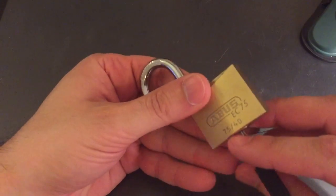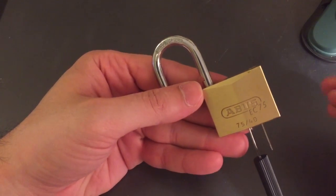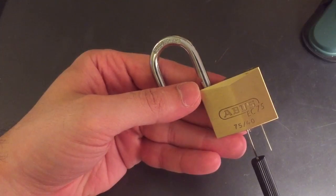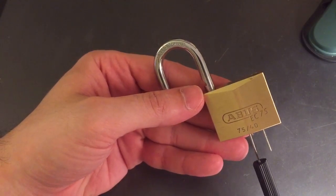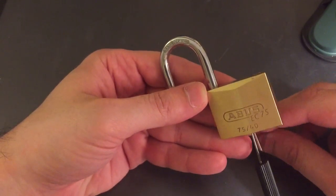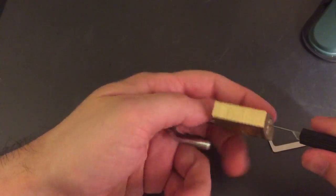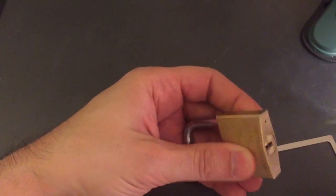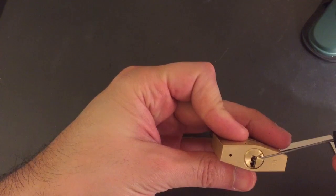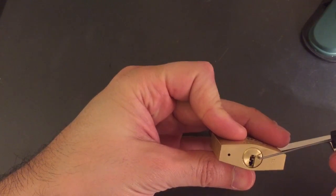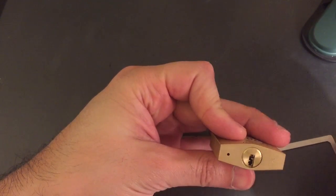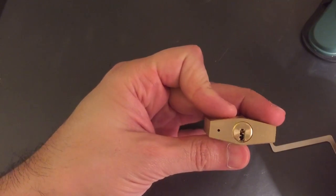So there you have it. Just a short video. The ABUS 7540 with the EC75 core. A surprisingly difficult little pick for what it is because of that tiny little keyway and because of the orientation of the core in the lock.